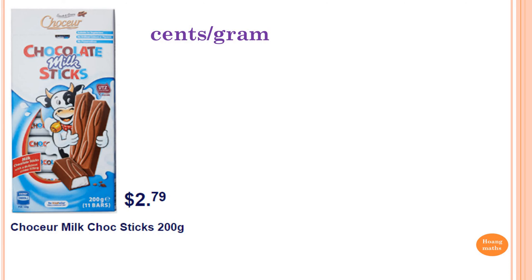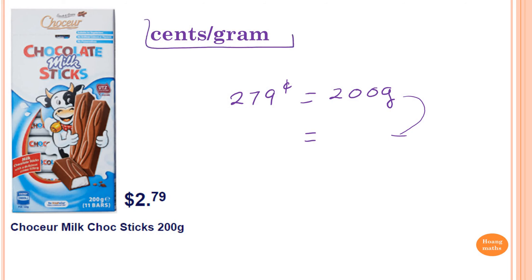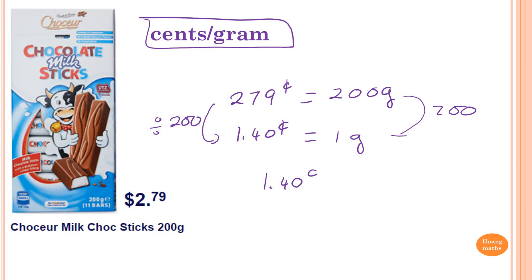Similarly, two dollars and seventy-nine cents — so two hundred and seventy-nine cents — equals two hundred grams. I want one gram, so I divide by two hundred on both sides. Two hundred and seventy-nine divided by two hundred gives me one point four zero cents. So this means one point four zero cents per gram.